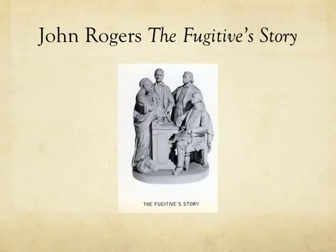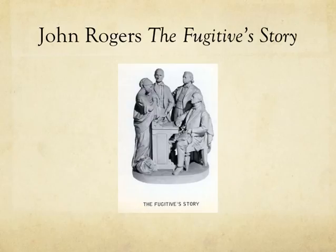This sculpture by John Rogers called The Fugitive Story expresses the plight of an escaped slave woman on her own. She carries a baby, signifying she is not only poor but also a single mother. It also depicts a small sack that carries all her worldly possessions, which, judging from the size, couldn't be a lot. She looks desperately at the men who appear as her social superiors.